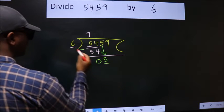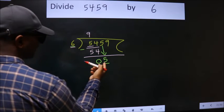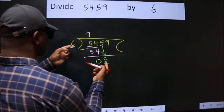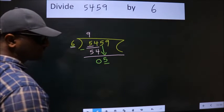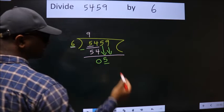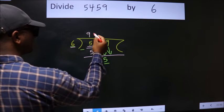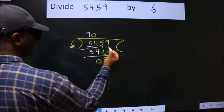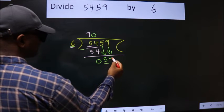Here we have 5, here 6. 5 is smaller than 6. So, we should bring down the second number. And the rule to bring down second number is put 0 here. Then only we can bring down this number.